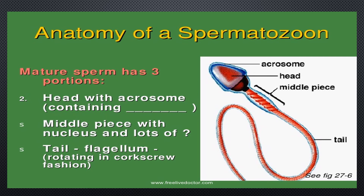The tip of the sperm head is called the acrosome, which enables the sperm to penetrate the egg. The mid piece contains the mitochondria, which supplies the energy the tail needs to move. The tail provides movement to the sperm.